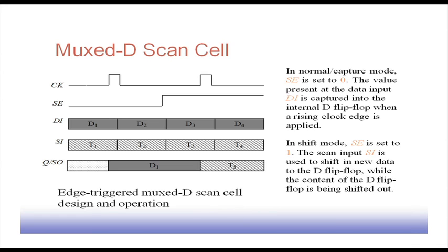Looking at the timing diagram: when the scan enable SE line is 0, whatever the content of data input DI, whenever the clock comes it gets loaded into the flip-flop, so the Q or SO line gets this value. After some time, when the clock was high, value D1 got loaded. When the clock comes again, by that time the scan enable line has been made high, so instead of loading data D3, it loads the test value T3. The test input T3 comes through the SI line and T3 is loaded. So depending upon whether the scan enable line is low or high, either the data input is loaded or the scan input is loaded.